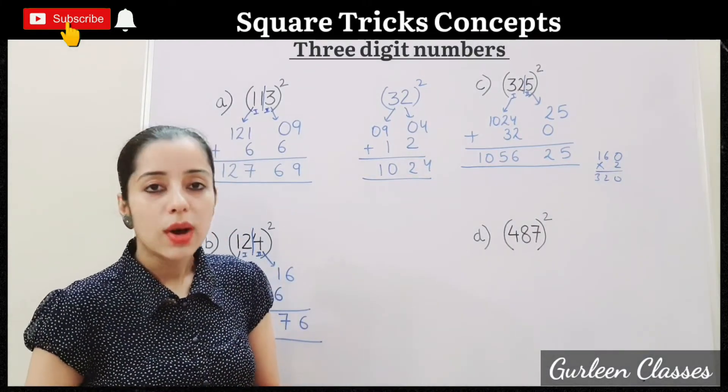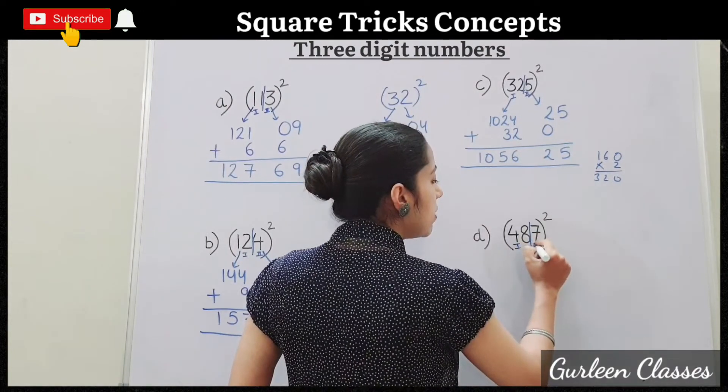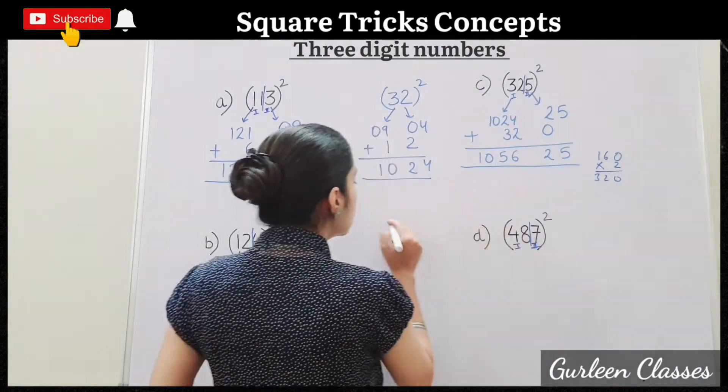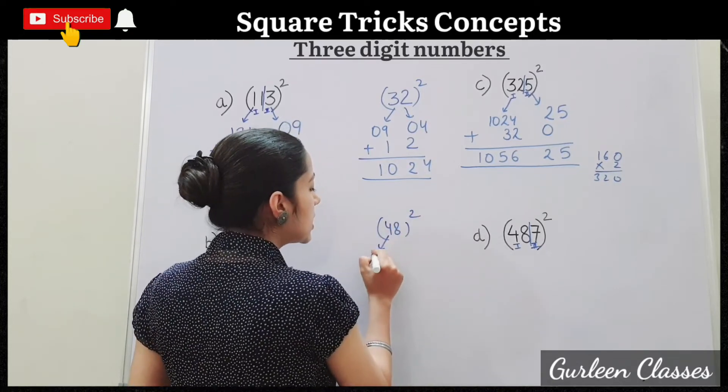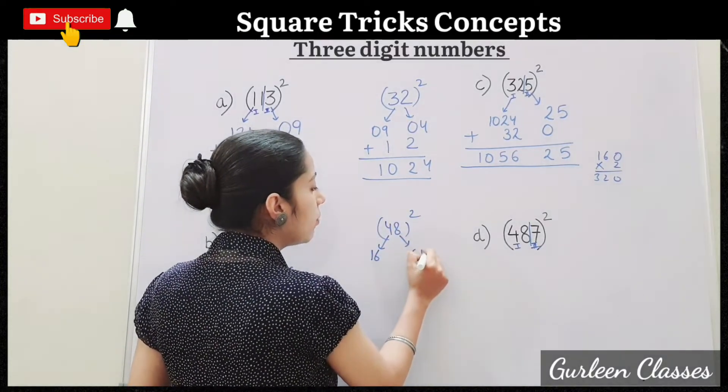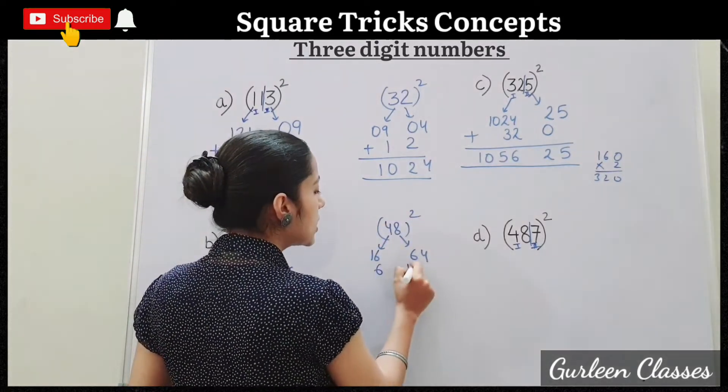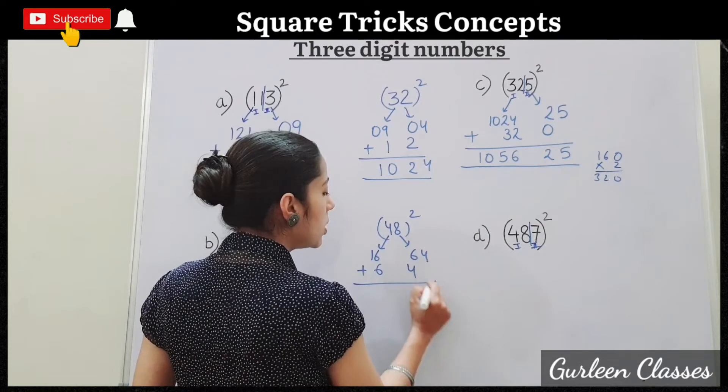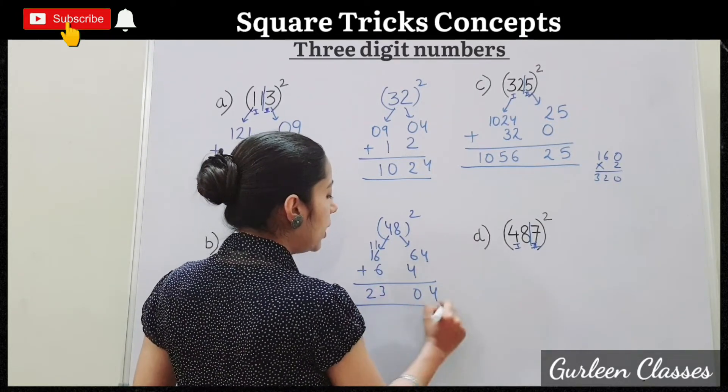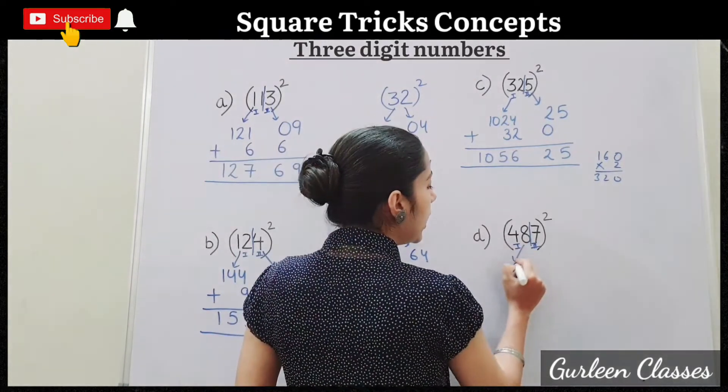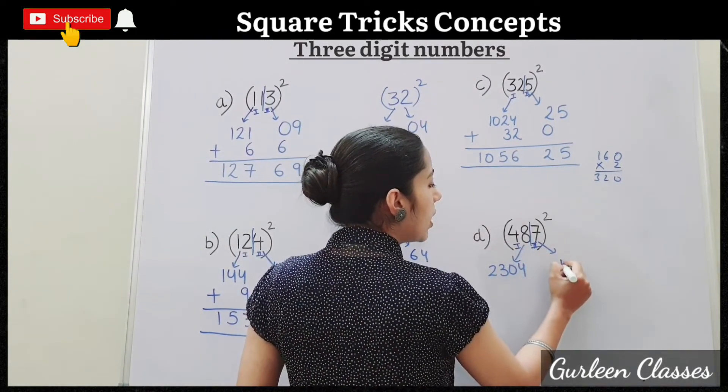D. 487 square. So here 48 will be our first number and 7 will be our second number. So let us find out 48 square. 4 fours are 16. 8 eights are 64. 4 eights are 32. 32 into 2, 64. So add 64. So it is 4. 6 plus 4, 10. 6 plus 6, 12 and 1, 30. So it is coming 2,304. 48 square, 2,304. 7 square, 49.